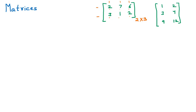For the second matrix, checking the number of rows: 1, 2, 3 — three rows. And columns: 1, 2 — two columns. So it is a 3×2 matrix with 3 rows and 2 columns. This matrix is exactly the same as a 2D array, confirming that a matrix is a 2D array. Number of elements: 3×2 = 6, so 1, 2, 3, 4, 5, 6 — six elements.